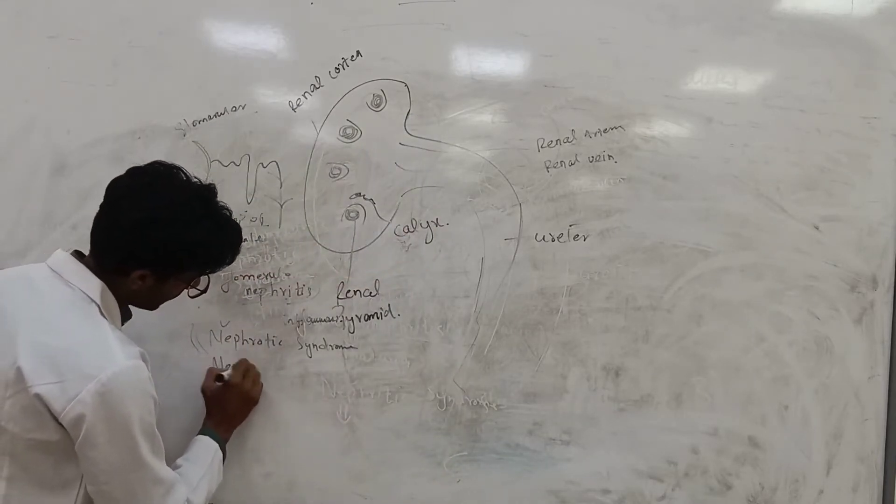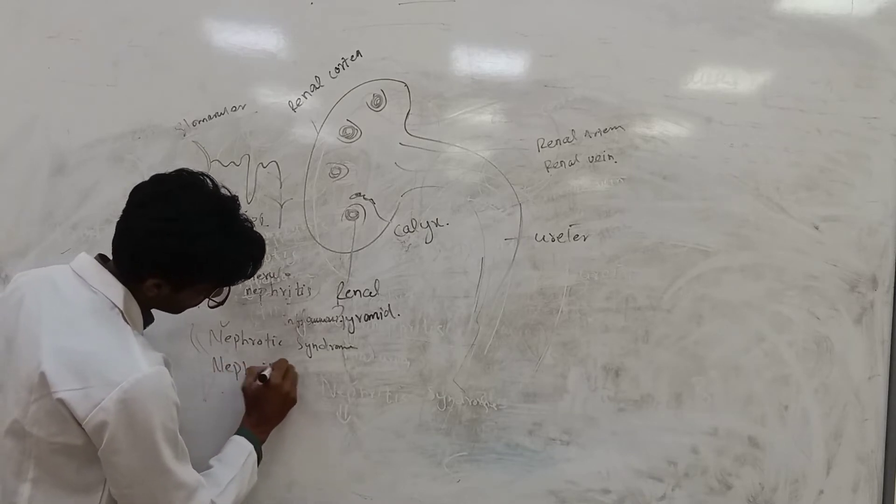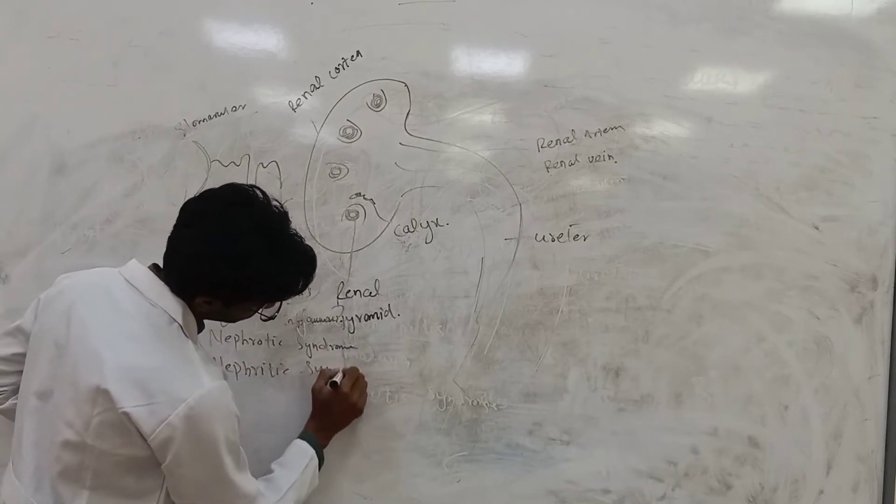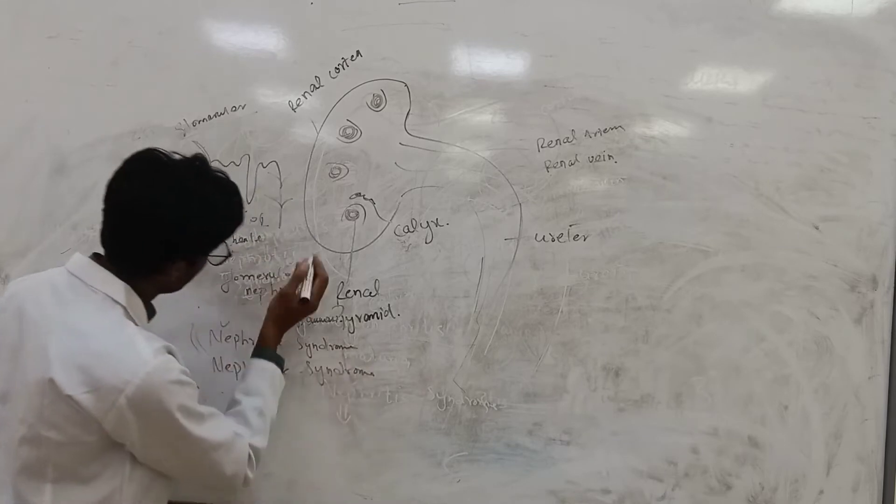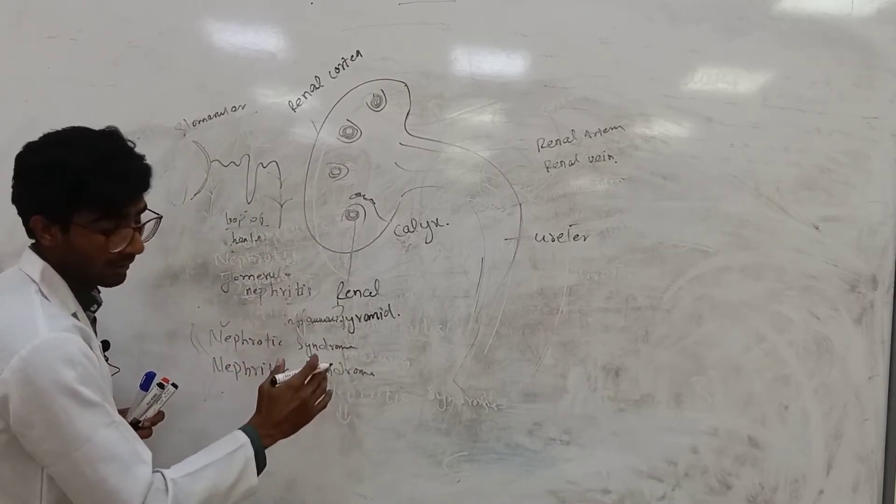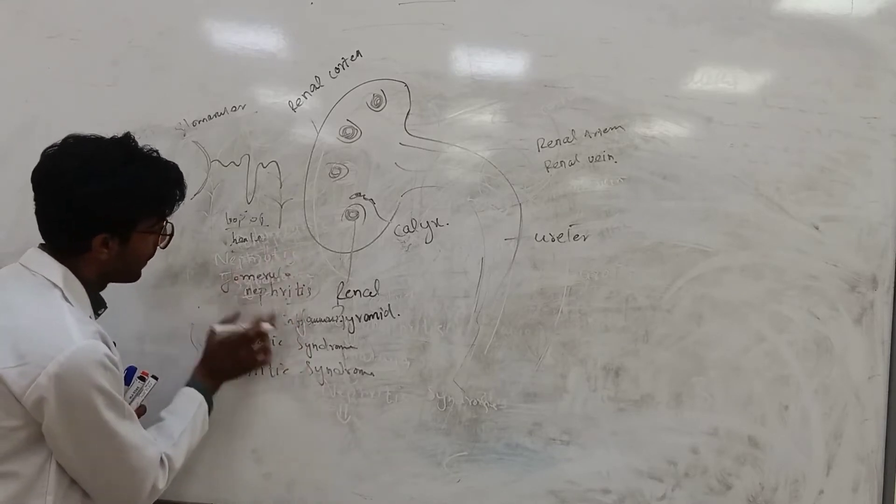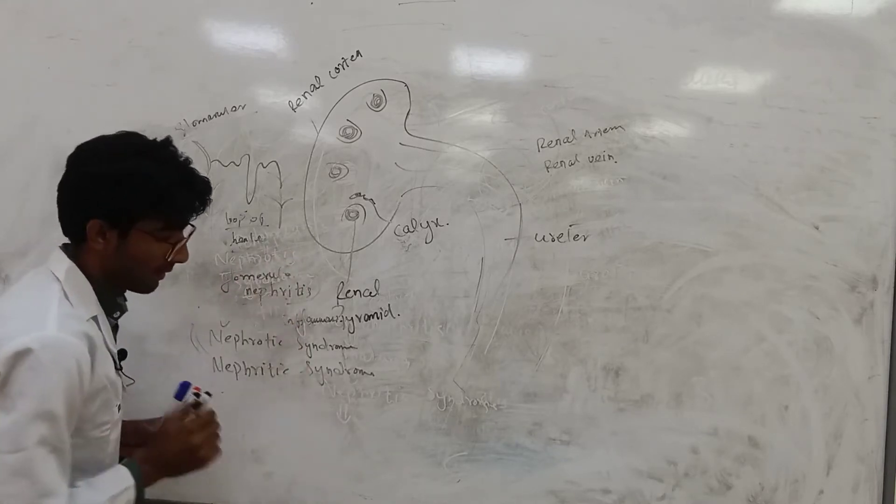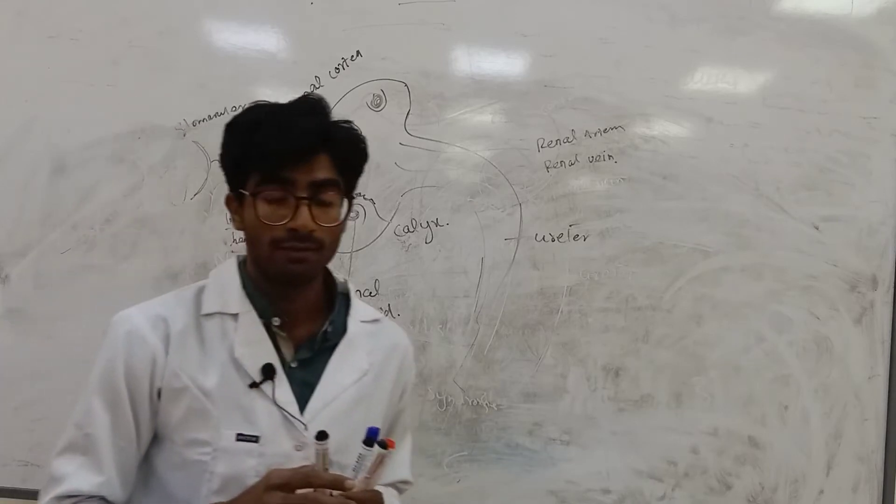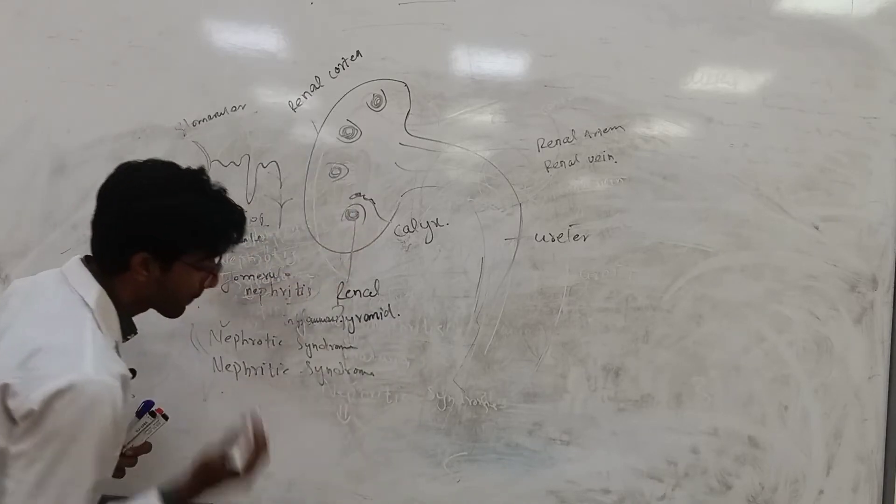Another which is nephrotic syndrome. It's a type of glomerulonephritis. The infection in glomerular, known as glomerulonephritis. But in glomerulonephritis, red blood cell is present.